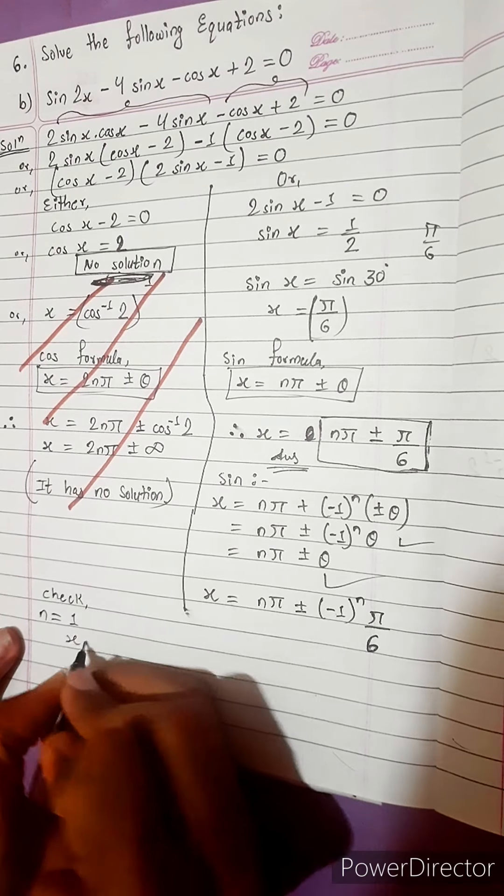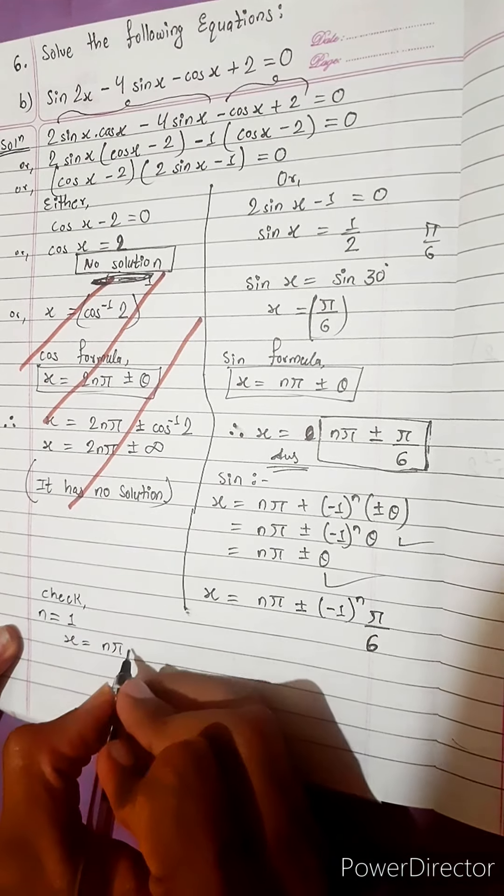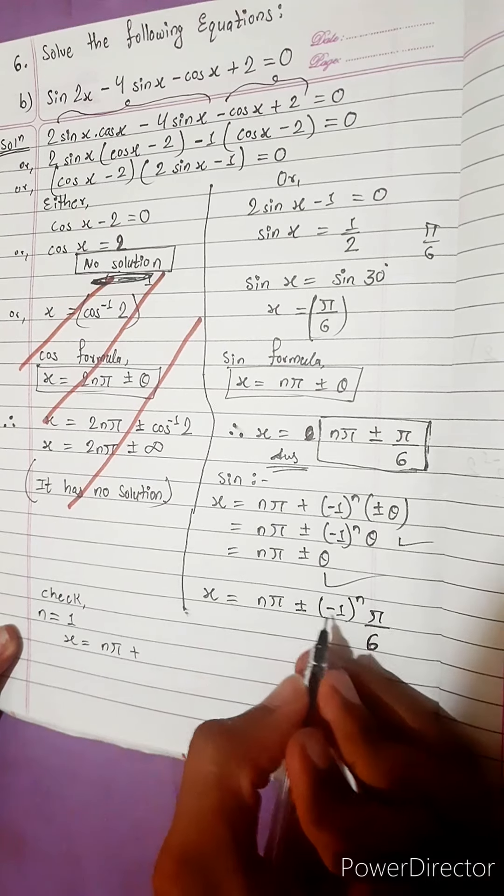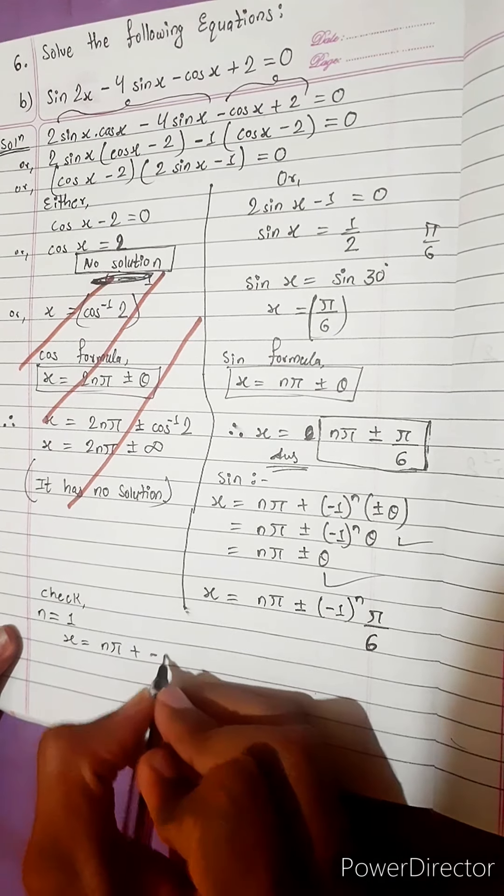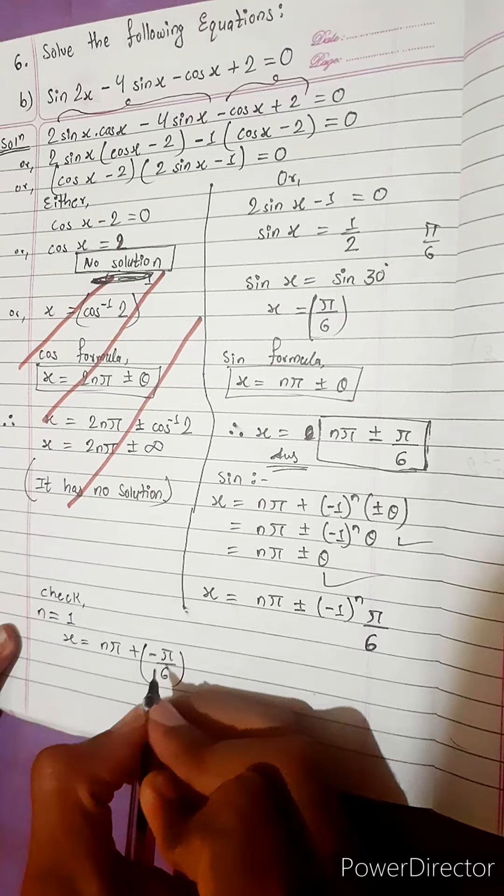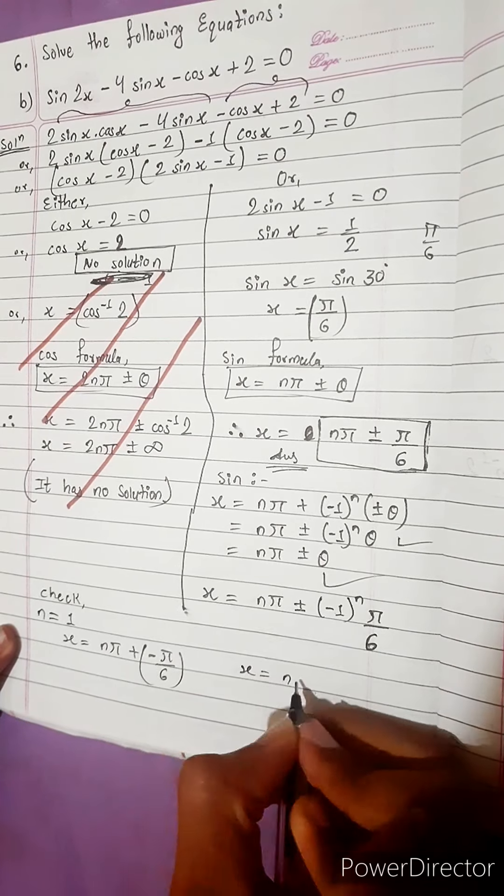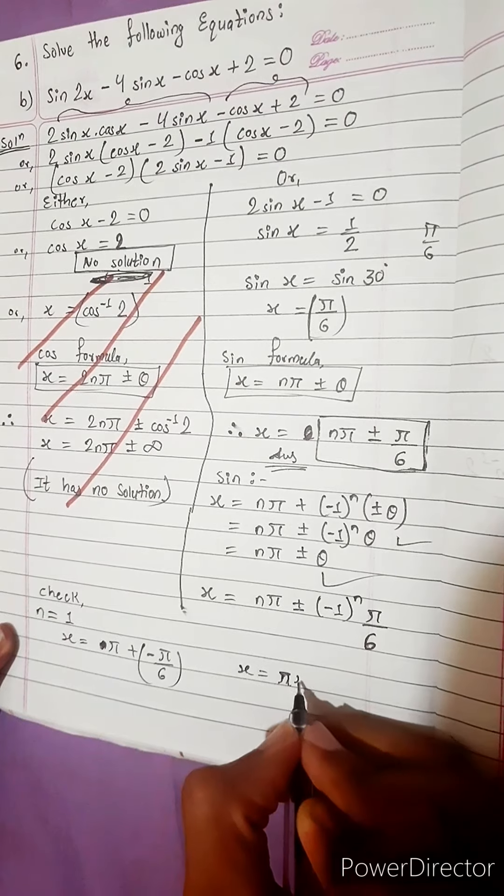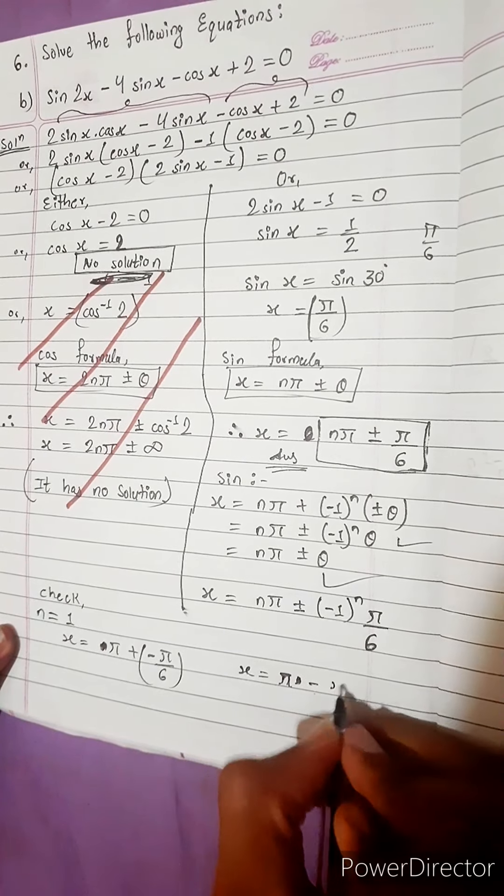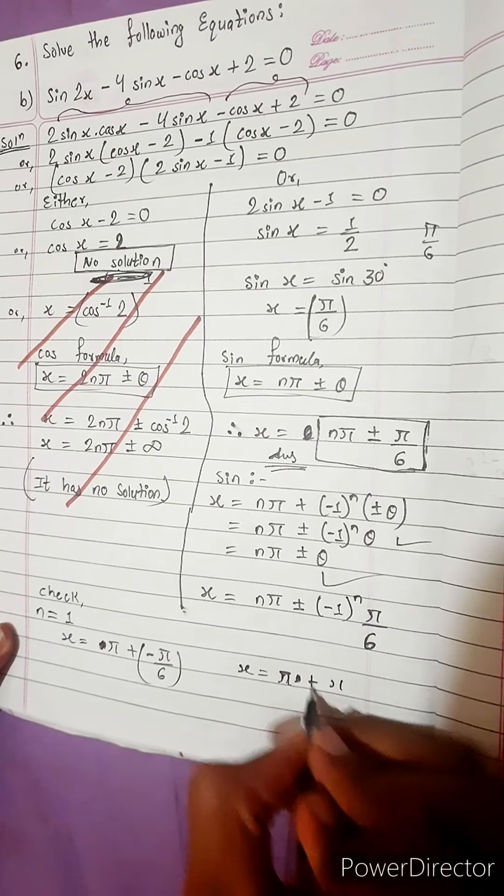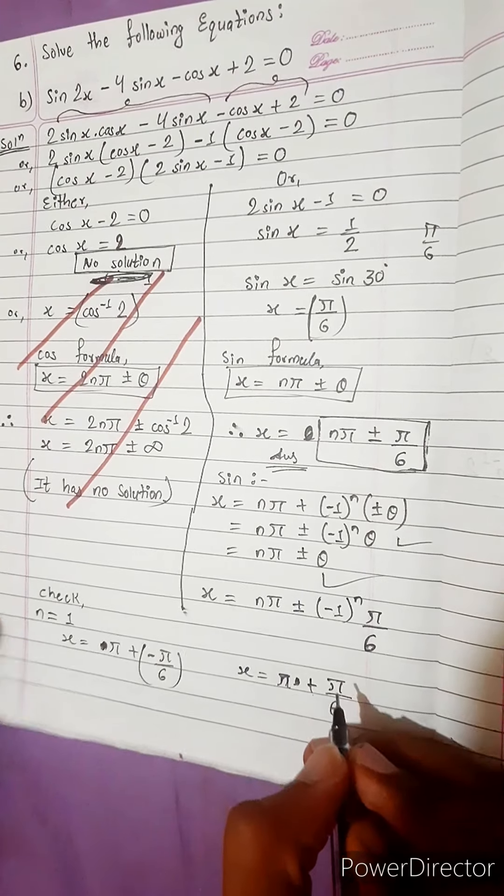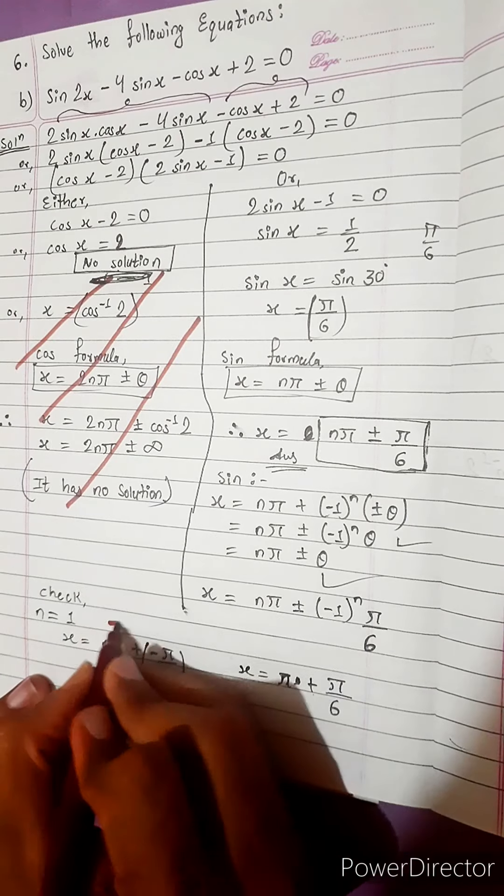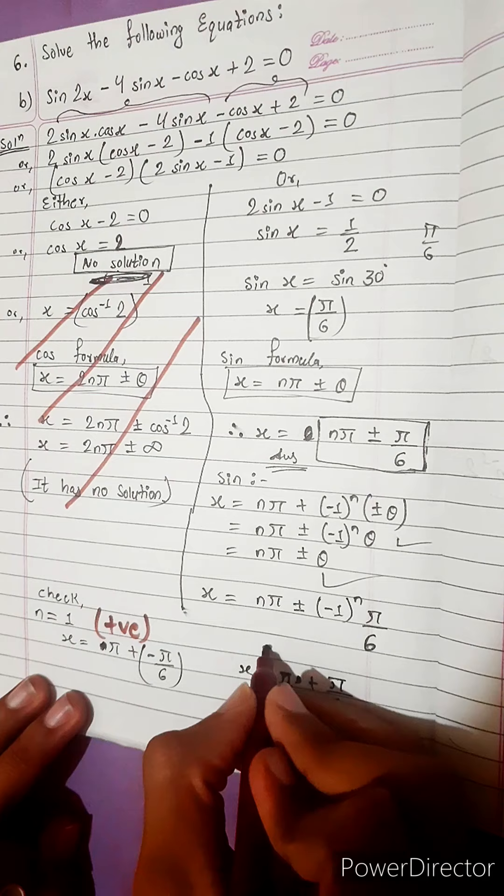And here, why minus is not given? Let's check. For n equals to 1, equals to n pi plus minus, minus pi by 6. This is 1. Another is no need to write n, directly write pi. Here is minus. Minus into minus plus pi by 6.